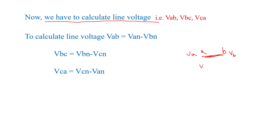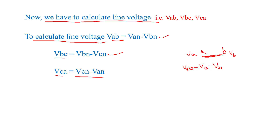Line voltage is VA minus VB. For a three-phase circuit, we calculate three line voltages: VAB, VBC, and VCA. VAB is calculated using the formula VAN minus VBN; VBC is calculated using VBN minus VCN; and VCA is calculated using VCN minus VAN. VAN, VBN, and VCN are the phase voltages. So we calculate line voltage with the help of phase voltage.